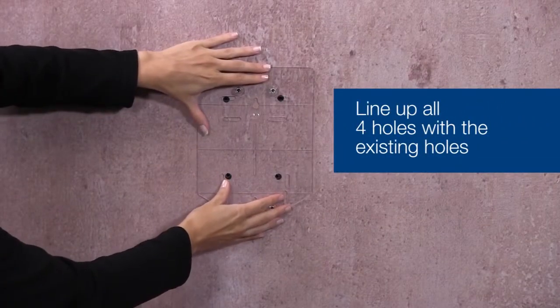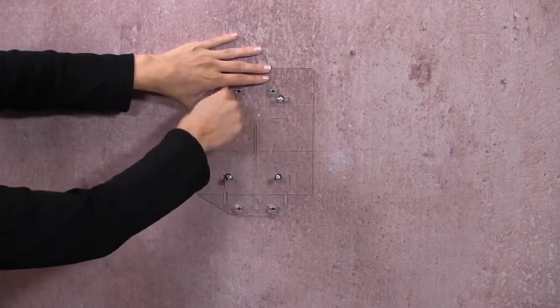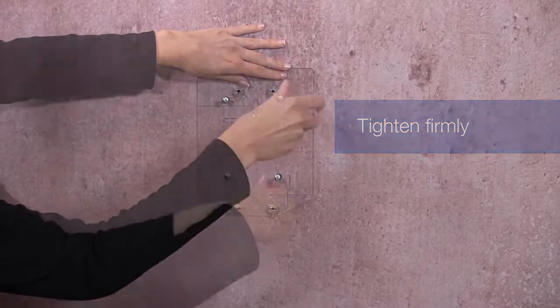Line up the four holes on the backplate to the existing hole pattern in the wall. Taking your four screws and your Phillips head screwdriver, tighten firmly.